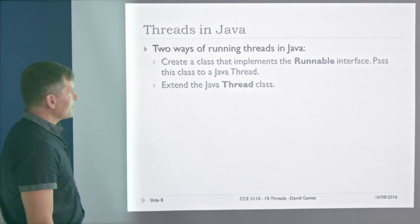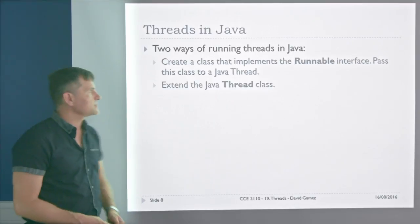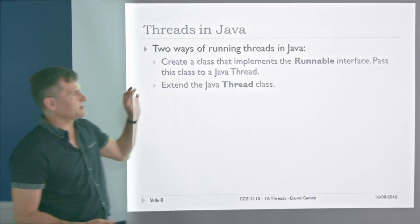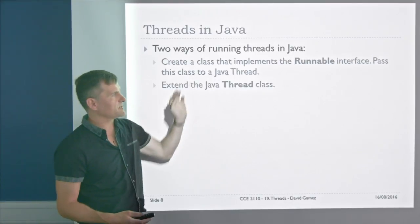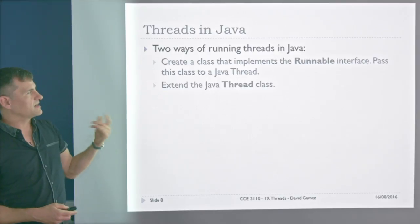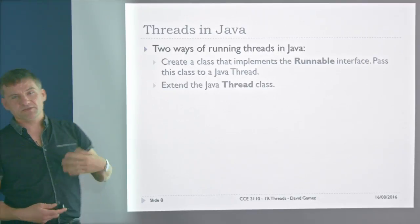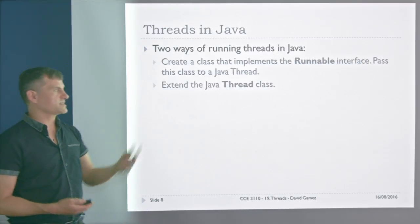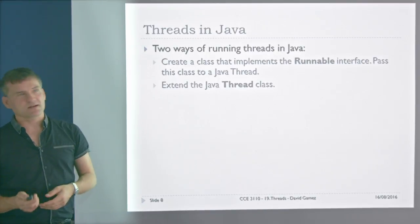In Java you have two ways of running threads. You can create a class that implements the Runnable interface and pass it to a Java Thread, or you can simply extend the Java Thread class.